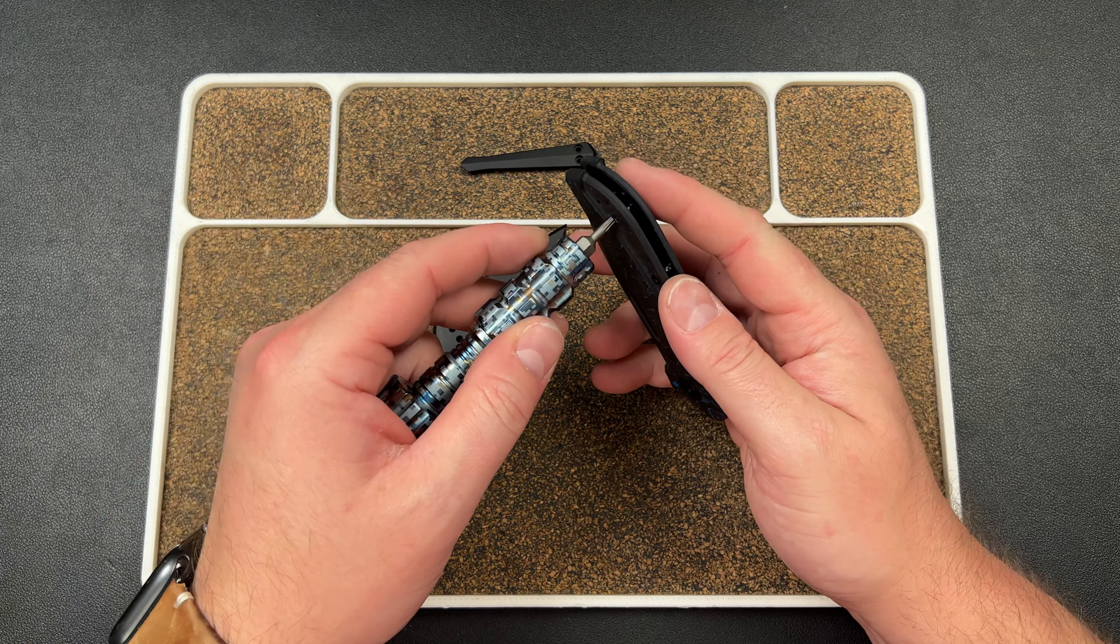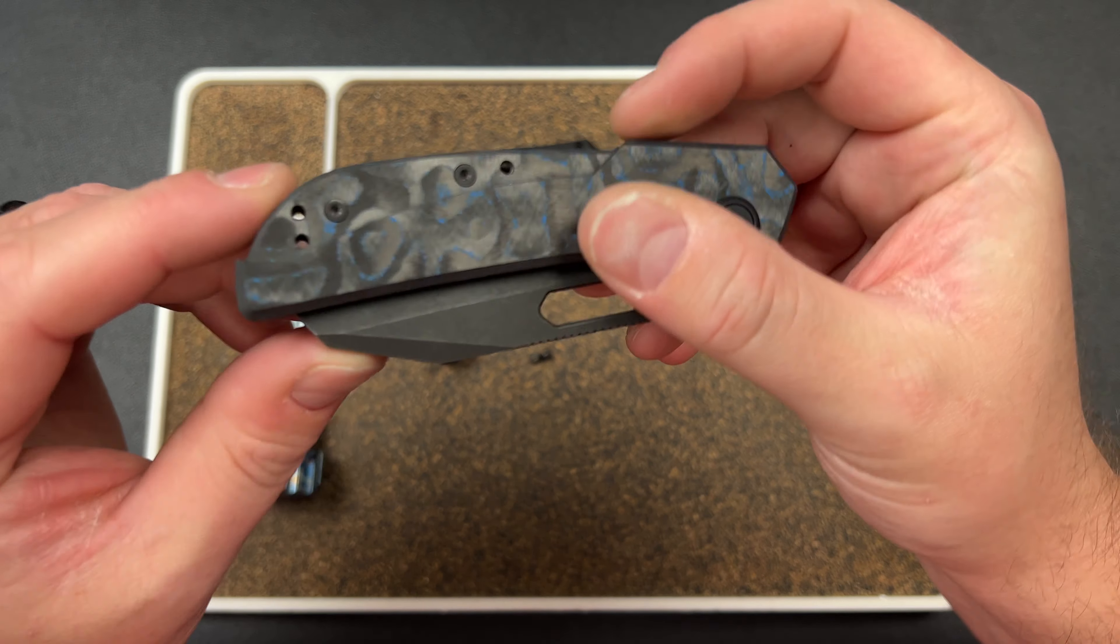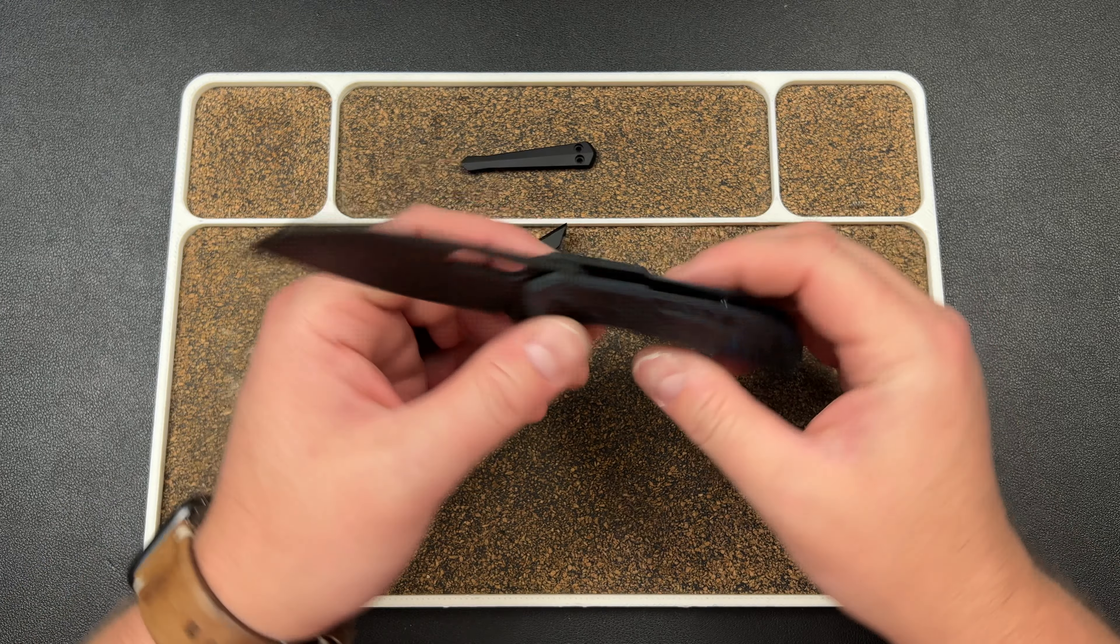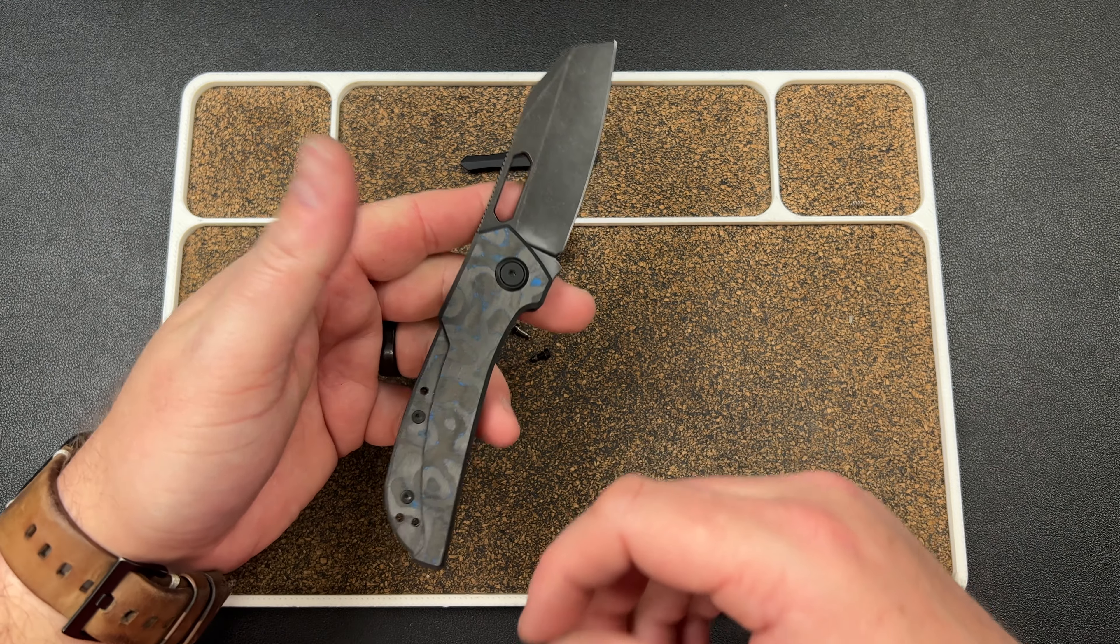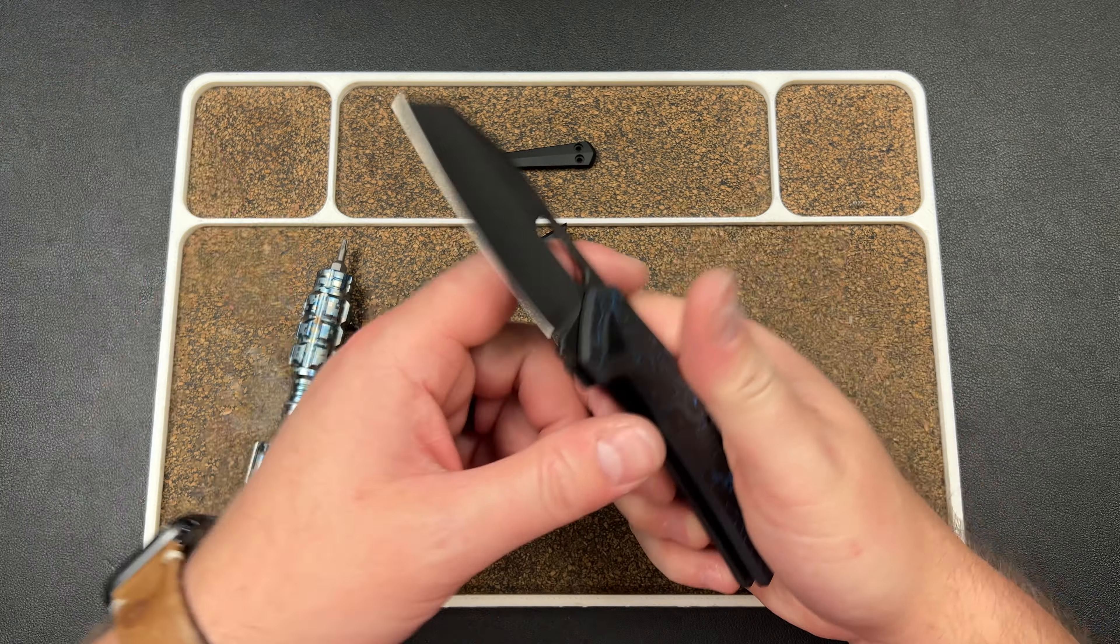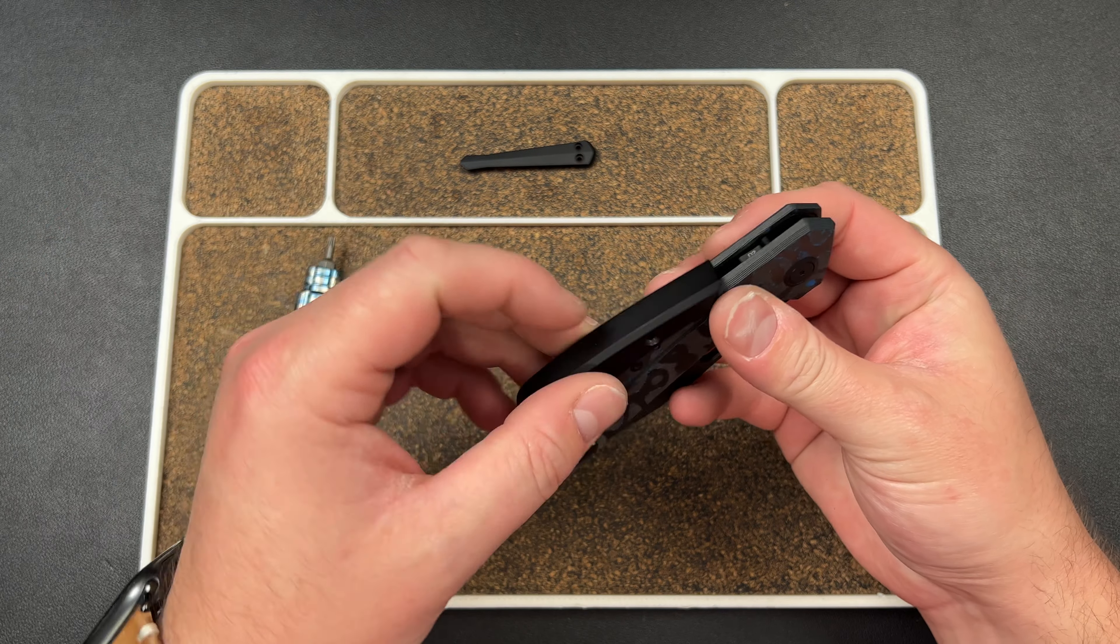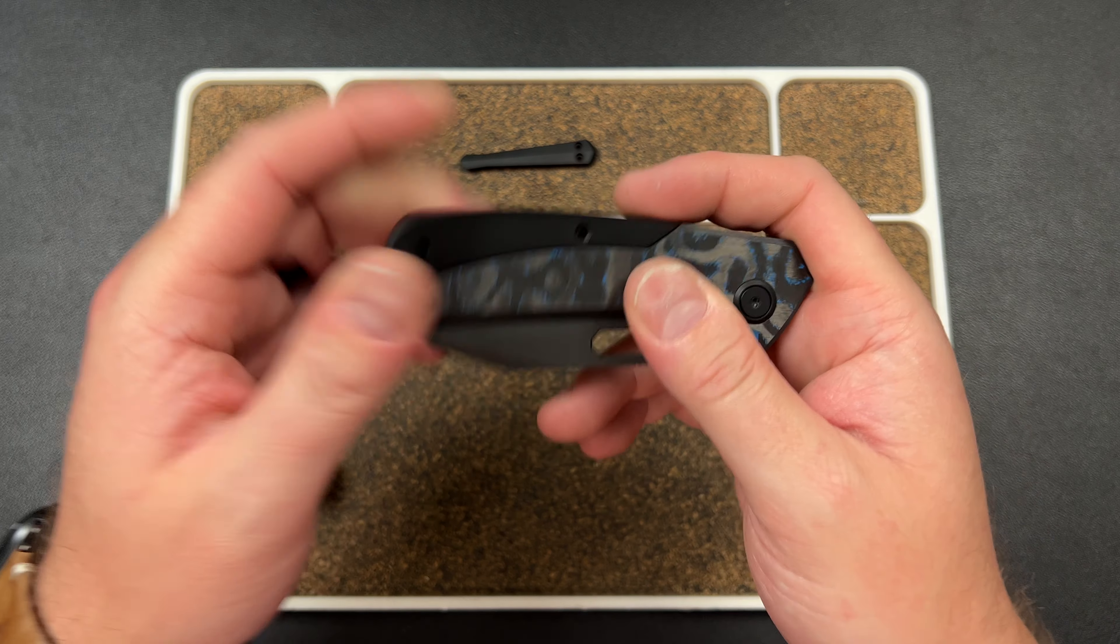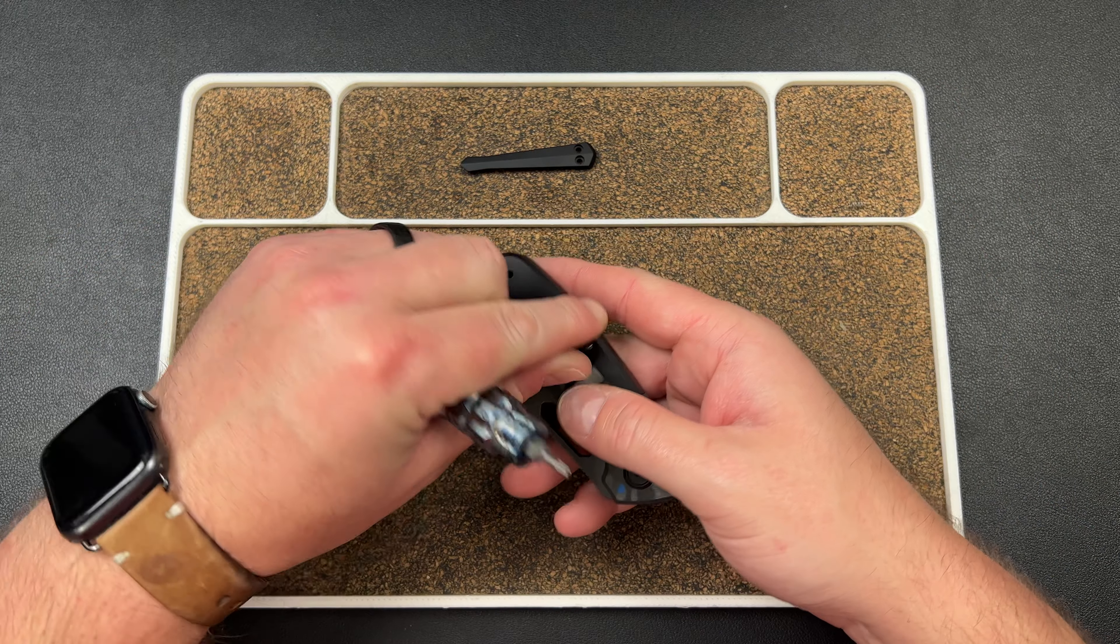Under here you have standoffs and you have body screws, so you could take that backspacer off and still have a fully functional knife. I don't know why you would do that, but technically somebody could make aftermarket stuff that's maybe a little different shaped, or if somebody wanted a lanyard post or something. Then it just slots back on like this.